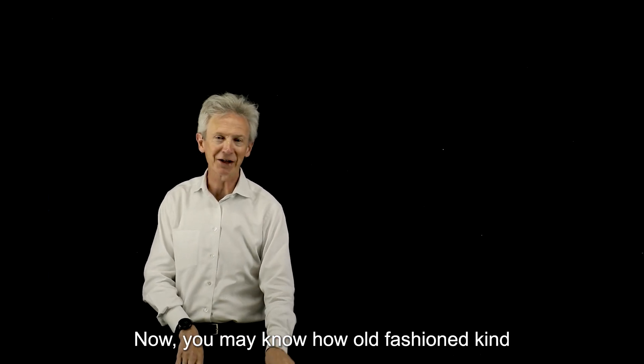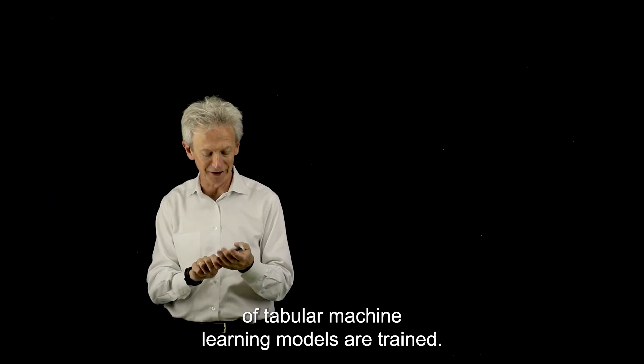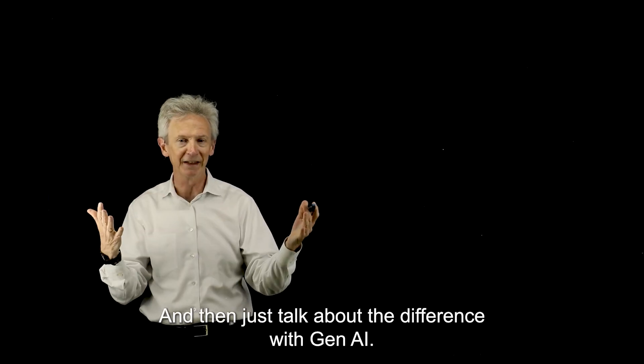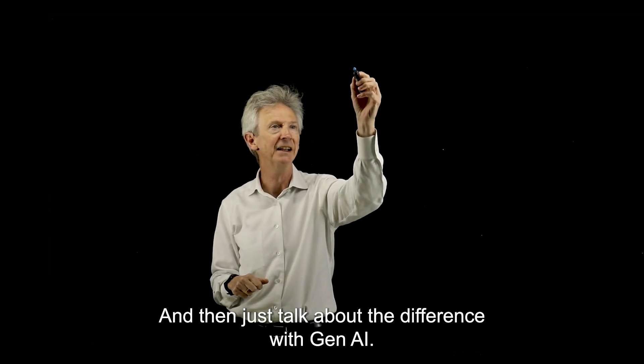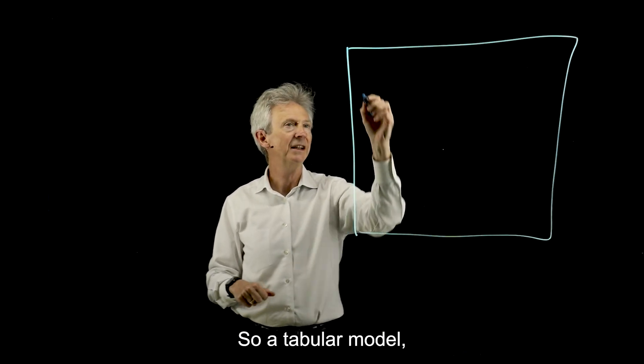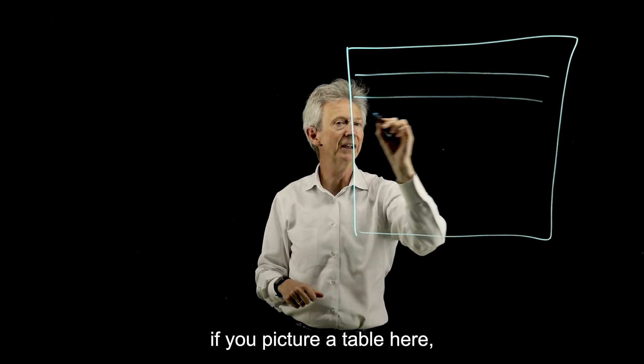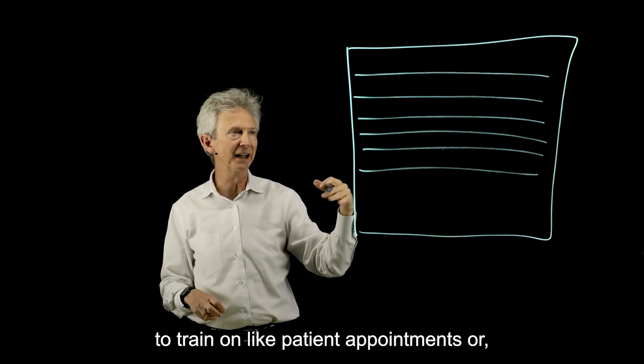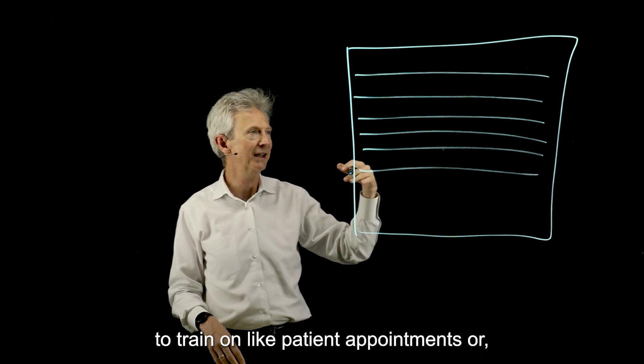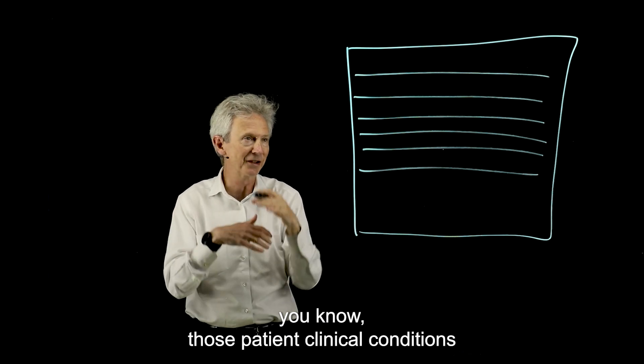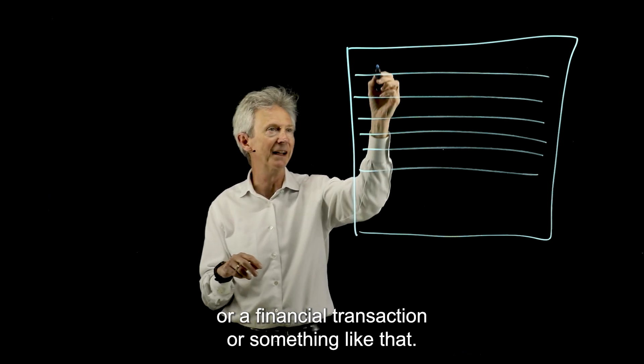You may know how old-fashioned tabular machine learning models are trained. I'll just remind you of that and then talk about the difference with Gen AI. So a tabular model, if you picture a table here, each row in the table is something that you want to train on, like patient appointments or those patient clinical conditions or a financial transaction or something like that.